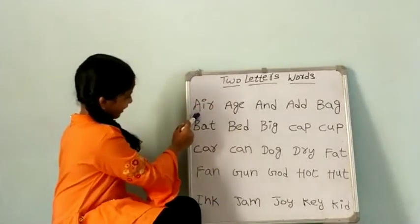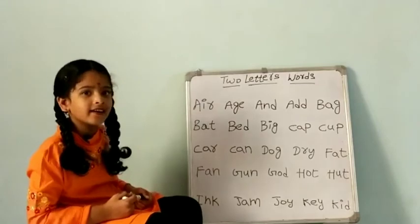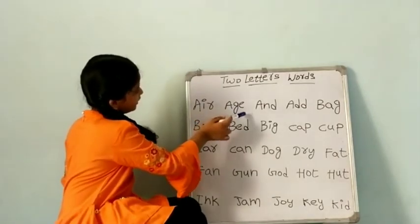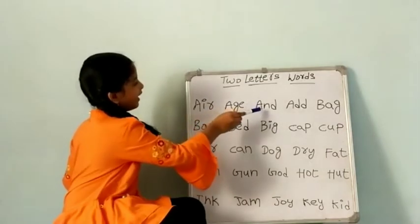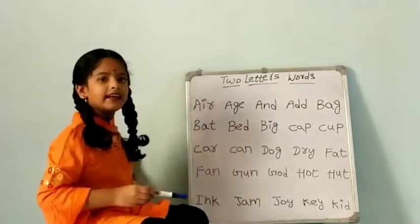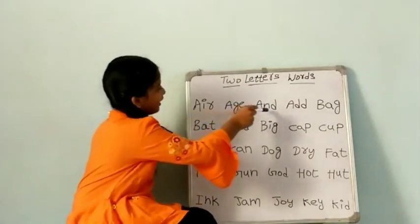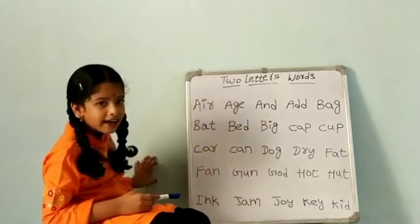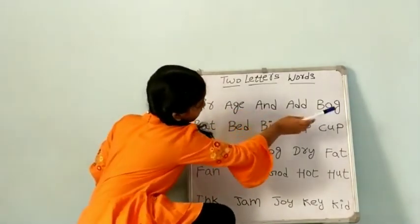A, I, R — air. A, G, E — age. A, N, D — and. A, D, D — add. B, A, G — bag.